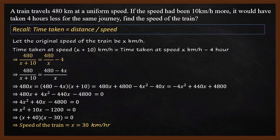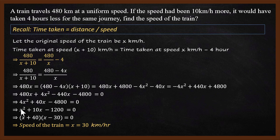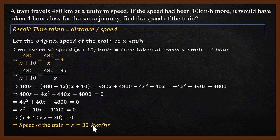To summarize: first, remember time equals distance divided by speed. Write the equation correctly, simplify it, solve the quadratic x squared plus 10x minus 1200 by factorization, and remember that x cannot be negative — giving 30 km per hour. Thanks for watching. Hopefully you understood how to solve problems like this. See you soon with a new video. Bye!